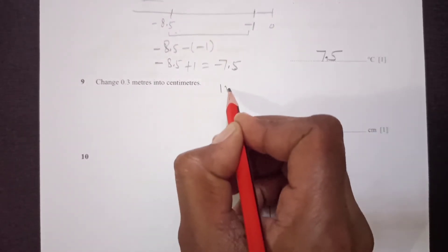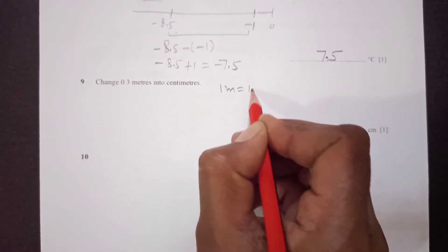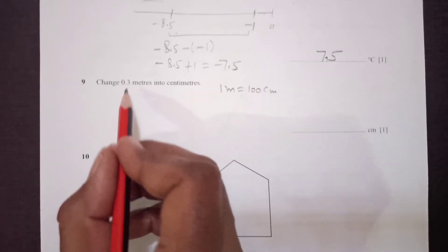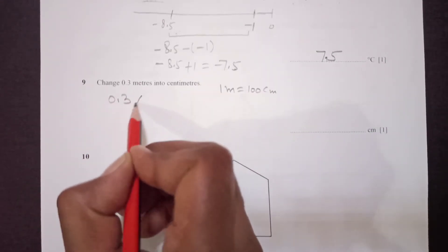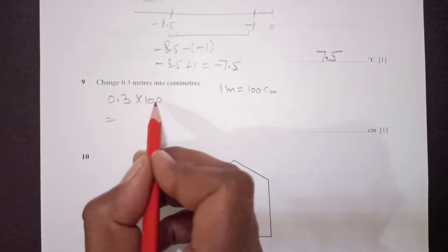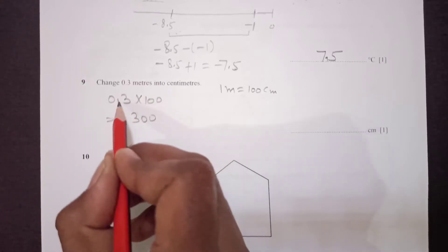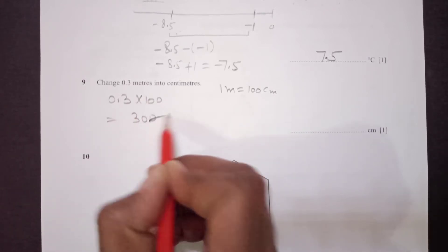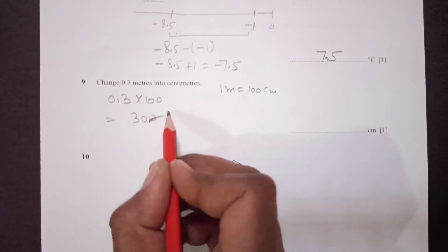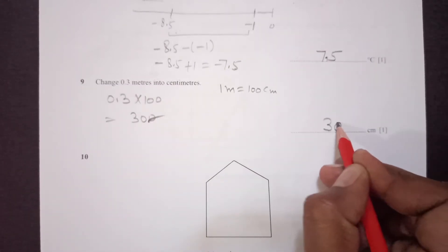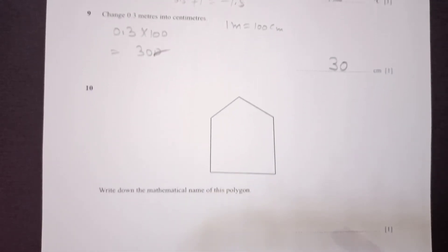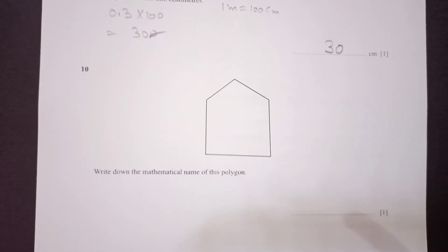Question 9: change 0.3 metres to centimetres. 1 metre equals 100 centimetres, so multiply by 100. 0.3 times 100 — move the decimal one place — gives 30. The final answer is 30 centimetres.